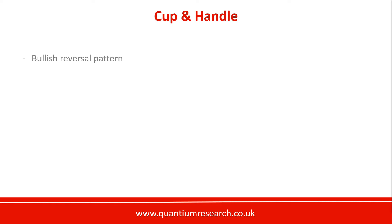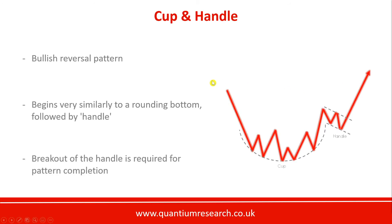A cup and handle pattern is essentially a bullish reversal pattern — a rounding bottom with a handle. The handle can take a few different forms: it could be a descending channel, as shown in this example, or a second miniature rounding bottom in some cases. The important thing is that there is a rounding bottom — the cup area — followed by some sort of pullback, which in this case is a descending channel forming the handle.